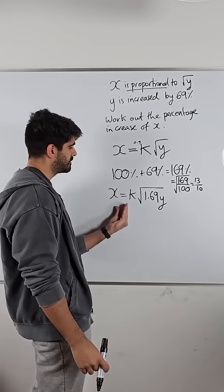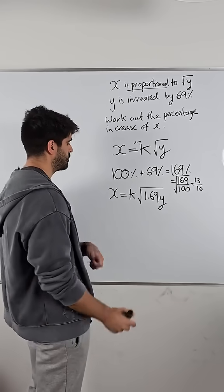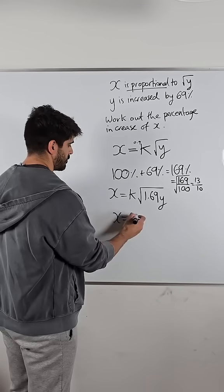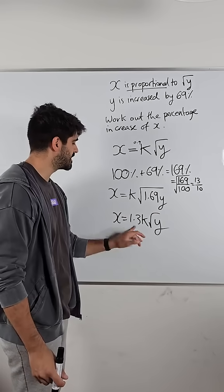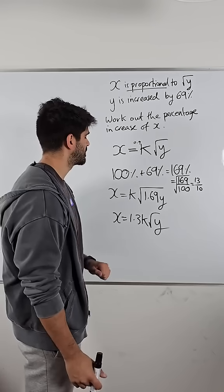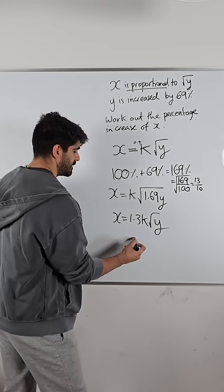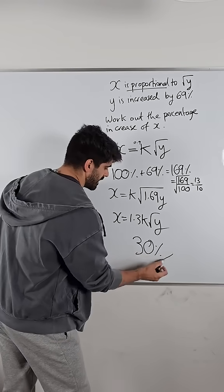So on the outside, it's 13 over 10, which is 1.3. So we get 1.3k root y. And now the root y is consistent, and we can see that x has increased by 30%. The multiplier is 1.3. So the answer here is 30%.